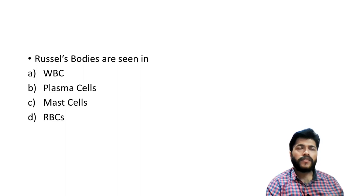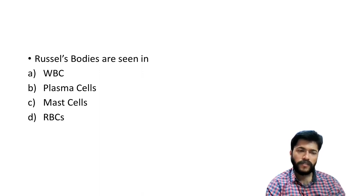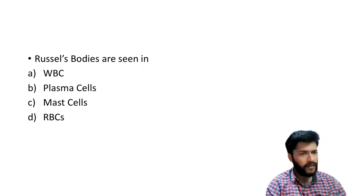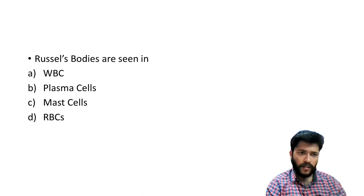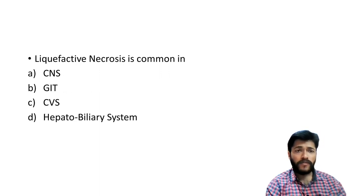Russell's bodies: what are Russell's bodies? They are basically seen in plasma cells — aggregations of immunoglobulins. Plasma cells are activated B cells that secrete immunoglobulins. In multiple myeloma, a plasma cell dyscrasia, abnormal plasma cells produce a lot of immunoglobulins. The inclusions which are seen in plasma cells are known as Russell's bodies. Mast cells generally secrete histamine and have basophilic bodies.